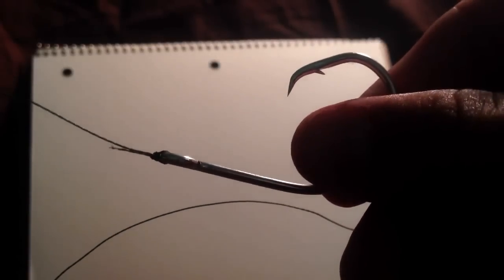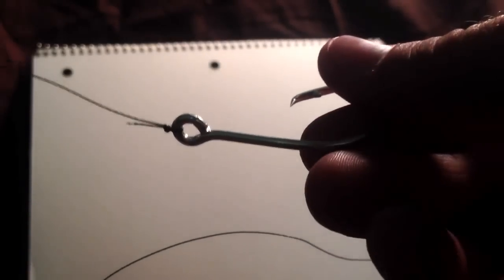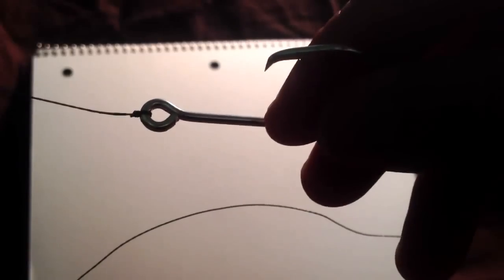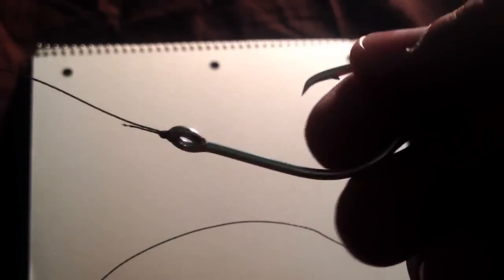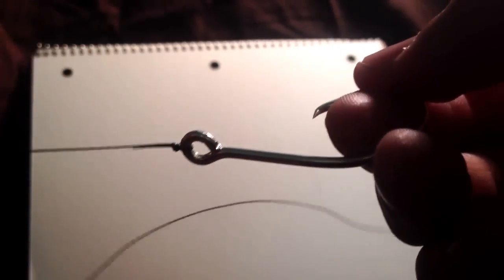Once you cut your tag end off, this is what you're left with. It is a very small knot. You can barely even see it there. But it is one of the strongest and it will hold against any fish that you catch.